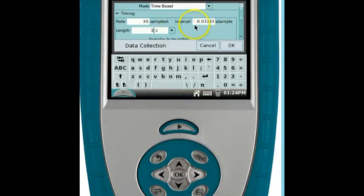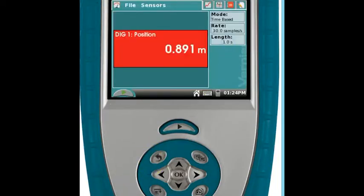This one here is just the interval between samples. I don't need to change that. That changes when I change the rate, 30 samples per second. This window on the right tells me that it's going to collect 30 samples per second for one second. So I'm ready to go. When I'm ready, I can press this virtual button or the real button down here and it will collect for me.